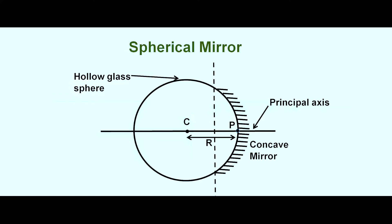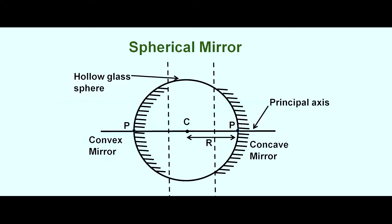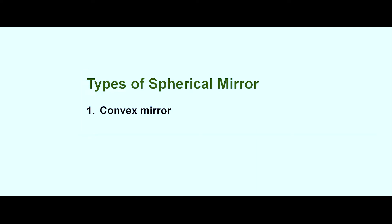In the same manner, if we silver the inner surface — that is the concave side of the hollow sphere — then we get a convex mirror. In the case of convex mirror, the reflecting surface is curved outward. The point where the principal axis cuts the surface is called the pole of the mirror, represented by P. So we have two types of mirror: convex mirror and concave mirror.